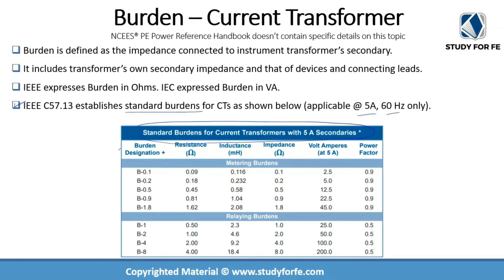Burden is designated, according to IEEE, as B-a number for current transformers. There are two different categories of burdens: metering burden and relaying burden. B-0.1 means the total impedance is 0.1 ohms. Similarly, B-1.8 means the maximum allowable burden is 1.8 ohms. For relaying burdens, you have B-2, B-4, B-8, and so on — representing 2 ohms, 4 ohms, 8 ohms, and so on.